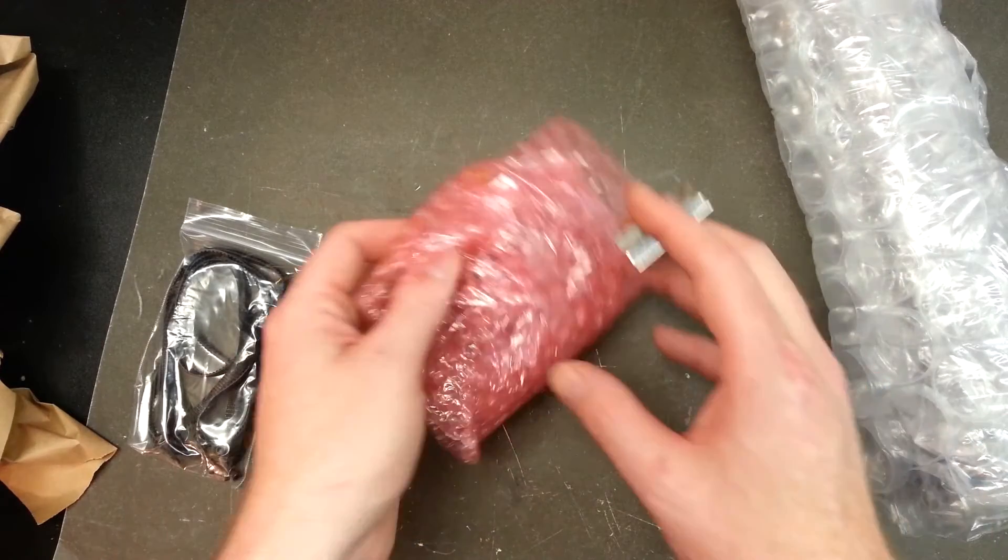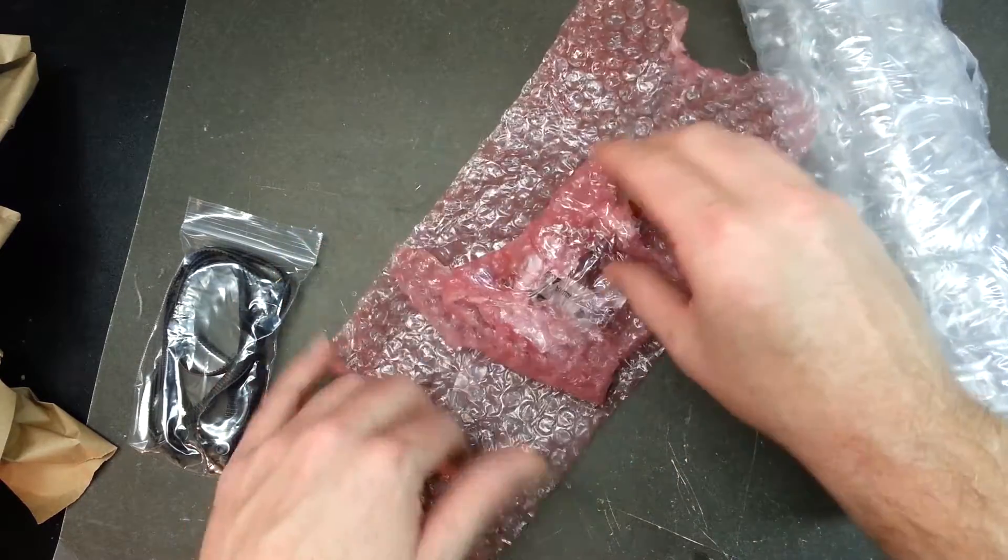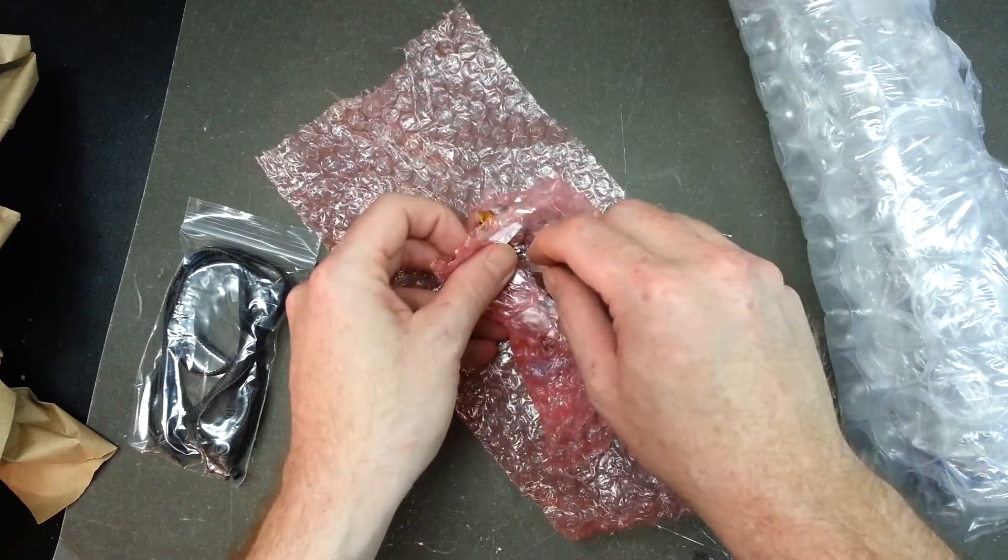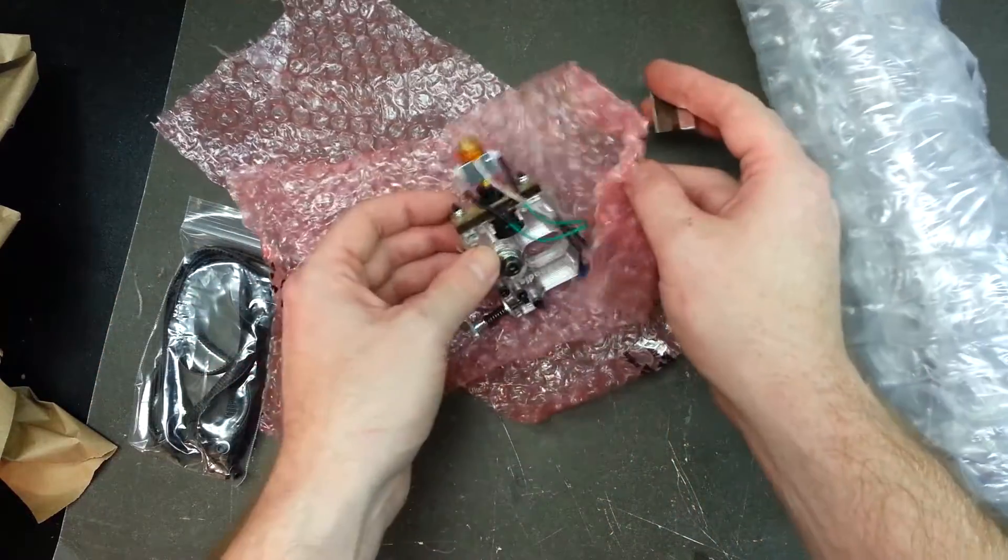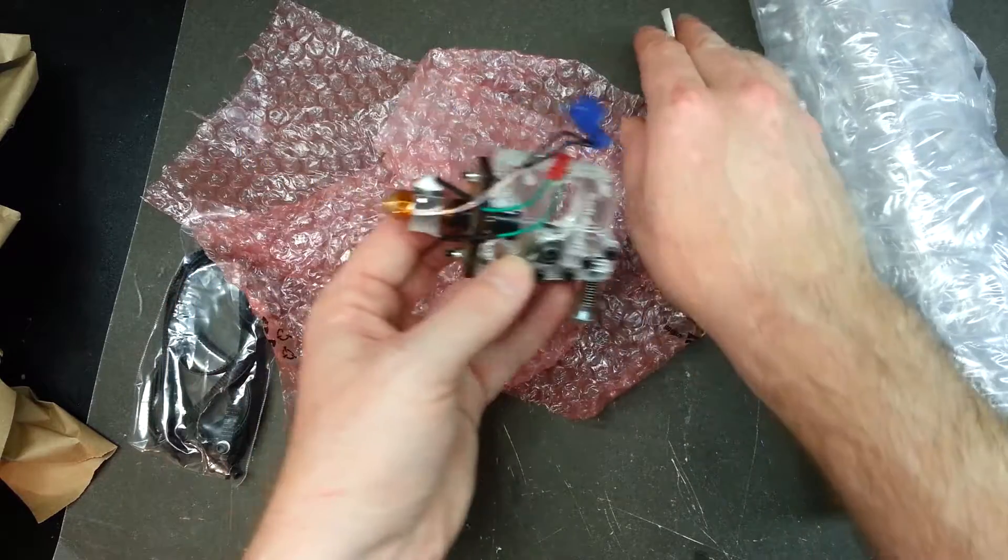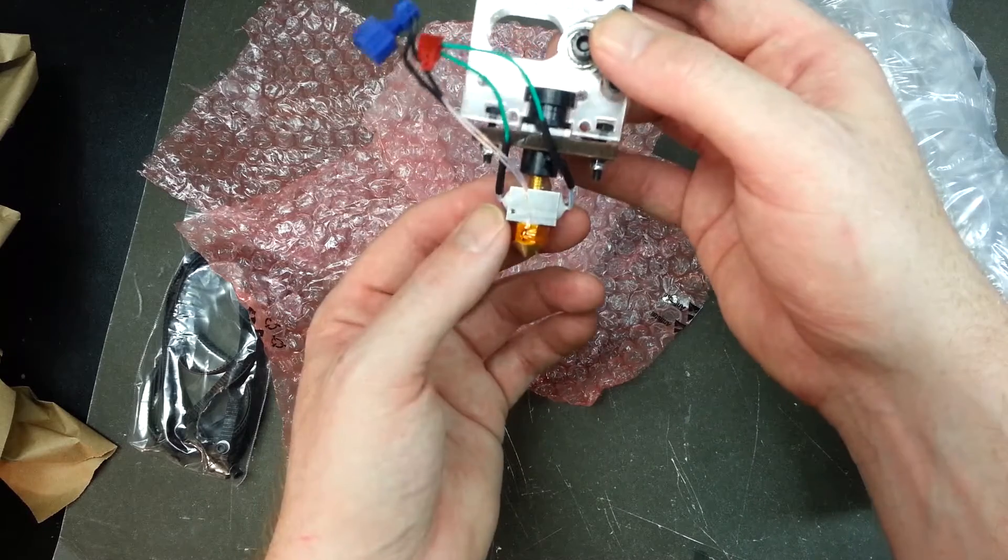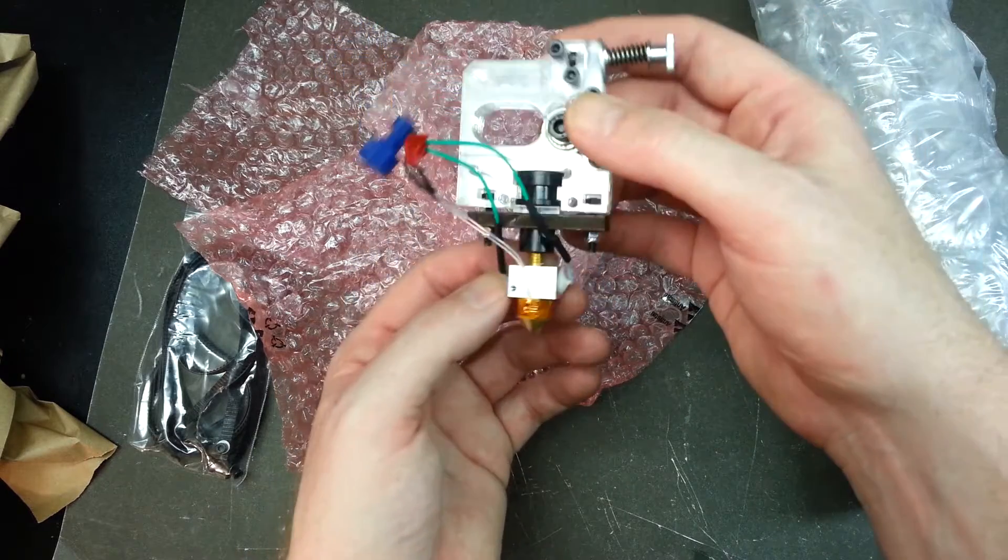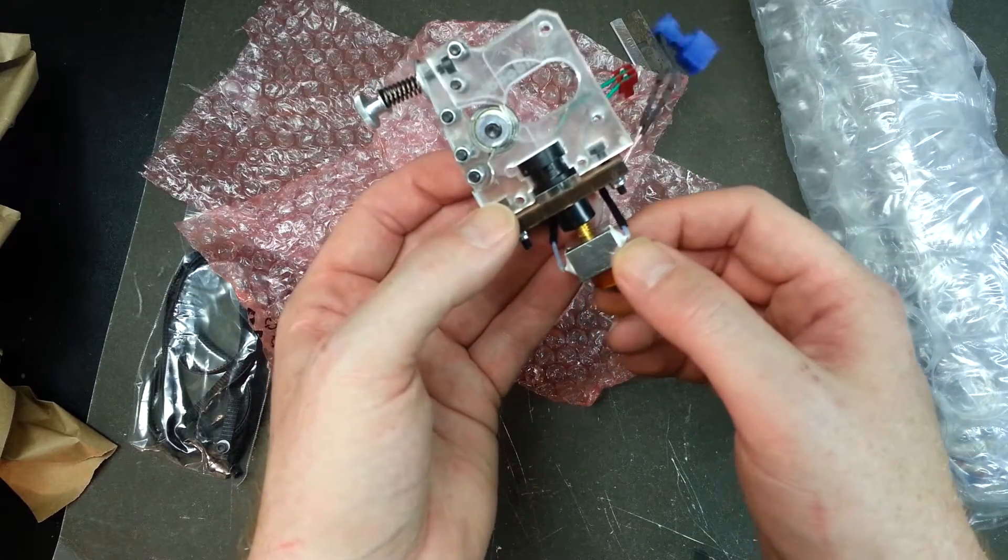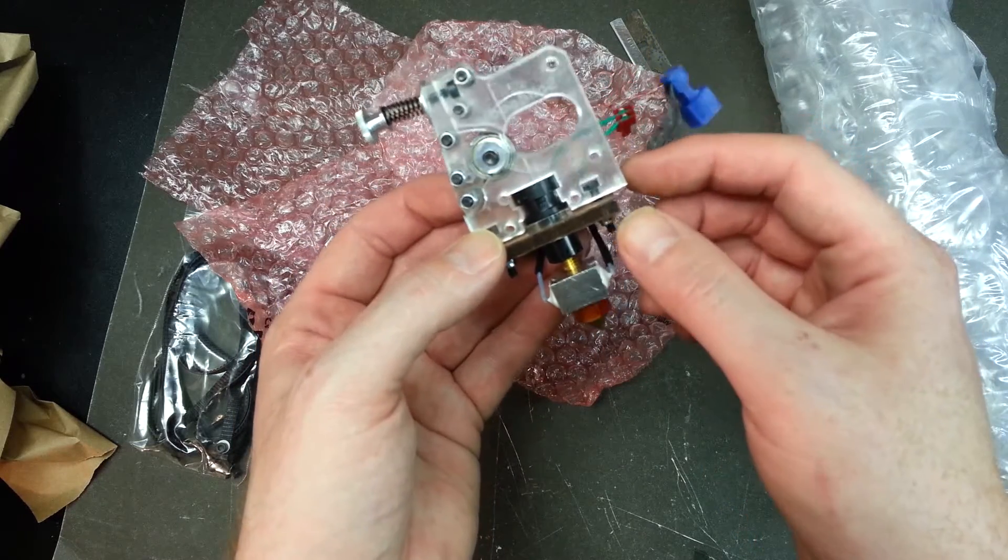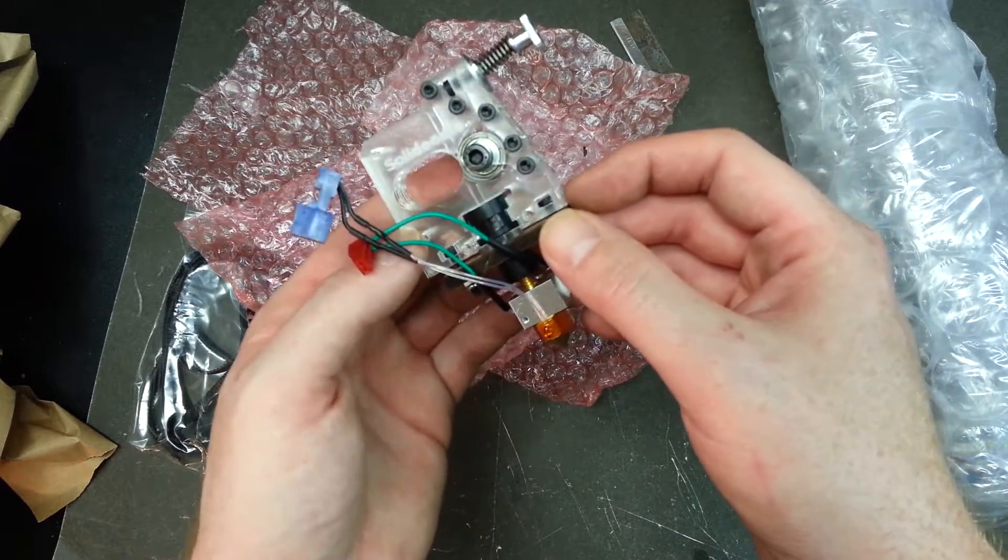Hopefully this should be my solution, at least a temporary one. This is a new hot end complete for my Solidoodle 2. That is significantly different than the original. That is a completely different heater block, way nicer, but the rest is the same. As long as this nozzle extension is the same, we should be good to go.